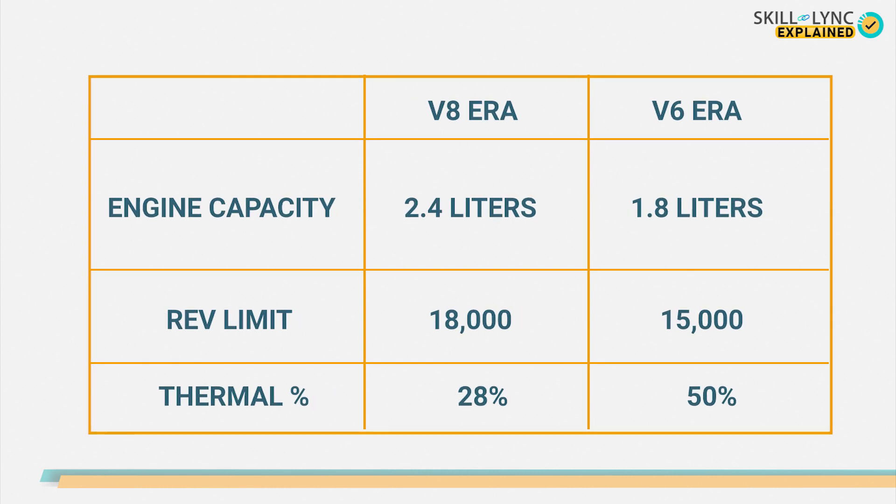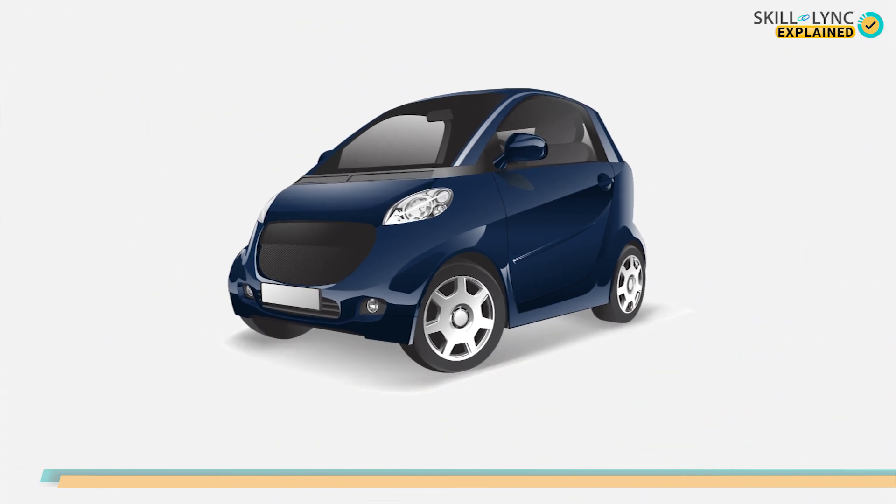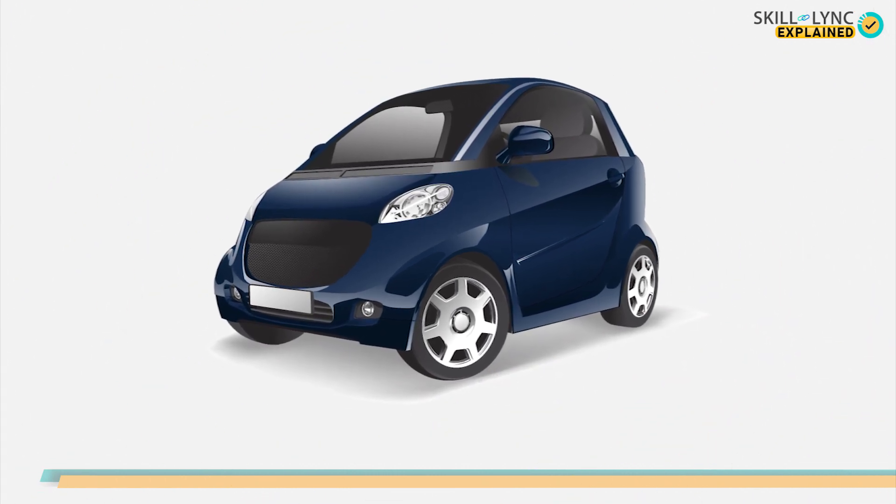Although this improvement in efficiency is to be expected as the engine size was reduced from 2.4 liters to 1.8 liters, the upper rev limit of the vehicles were also reduced to 15,000 RPM from 18,000. Even with these reductions, a jump from 28% to 50% thermal efficiency is unprecedented. So let's now focus on the main reason behind this, the hybrid electric drive.